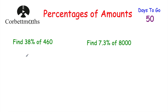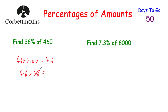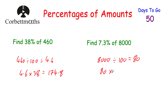Here are some calculator questions to try. Find 38% of 460: take 460 divided by 100, which gives 4.6 — that's 1%. Then 4.6 multiplied by 38 equals 174.8. Next, find 7.3% of 8,000: take 8,000 divided by 100, which is 80 — that's 1%. Then 80 multiplied by 7.3 equals 584. Hopefully you got both of those right.